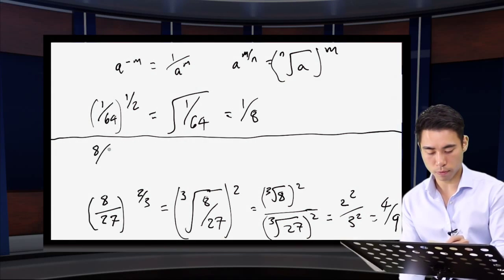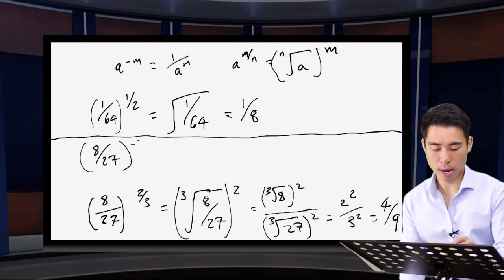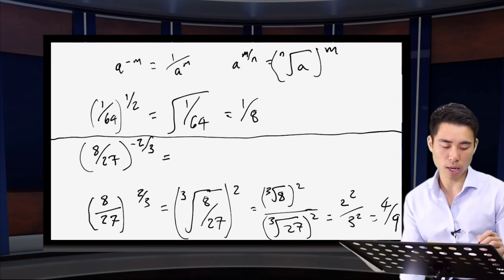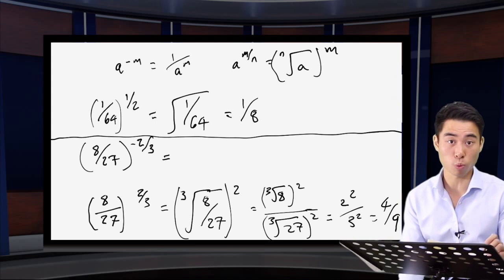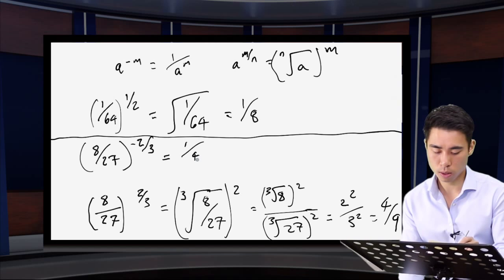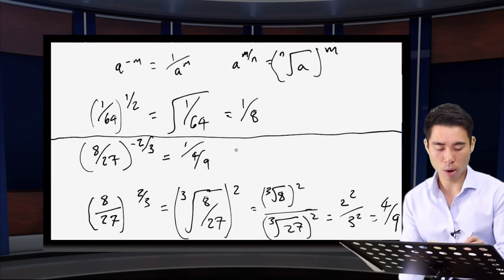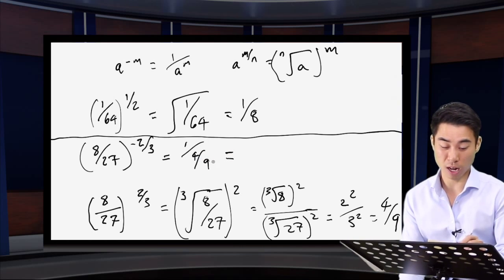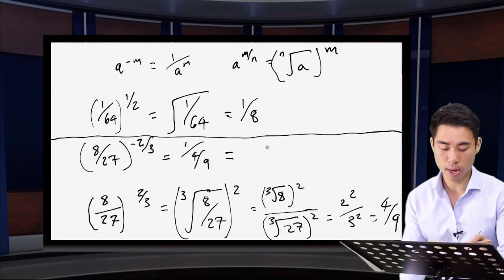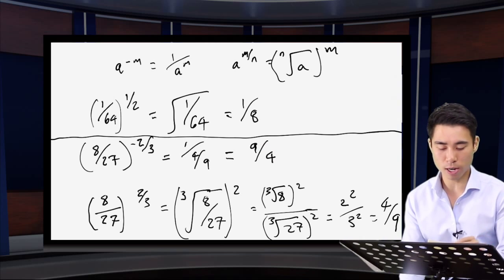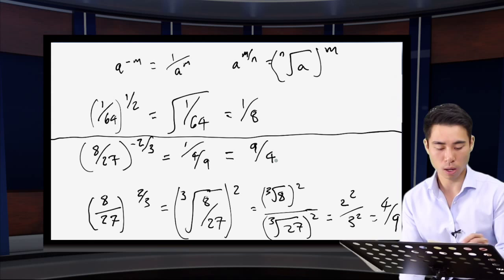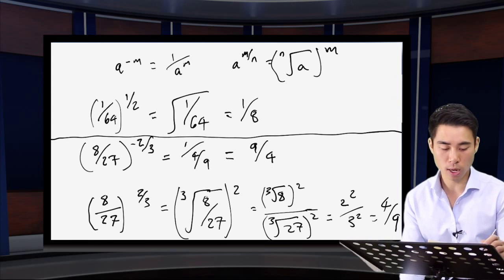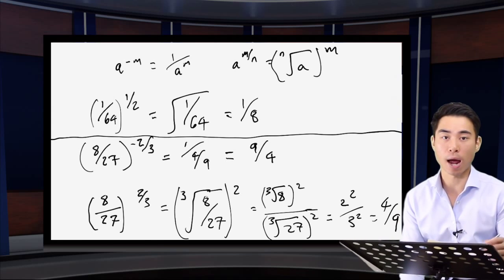If this exponent became negative — two over three becoming minus two over three — you'd have one over four over nine. To get rid of that fraction within a fraction, multiply top and bottom by nine, giving nine over four. Notice: a negative power on a fraction just means you flip the fraction. So one over four over nine is nine over four. Similarly, one over six over seven would be seven over six.